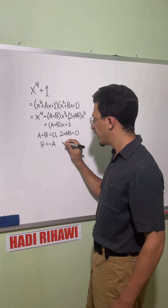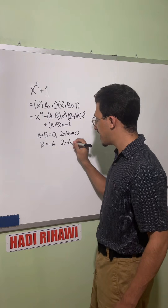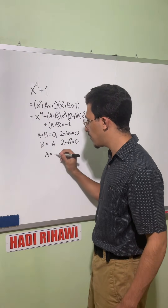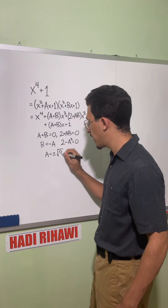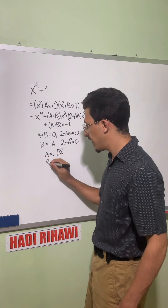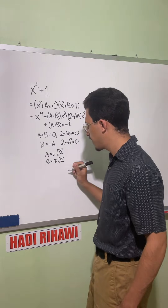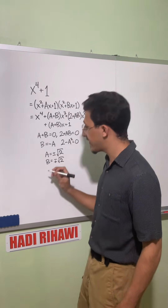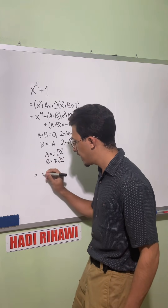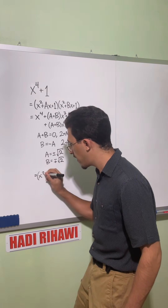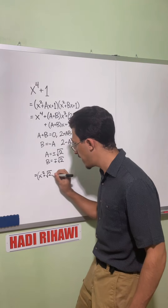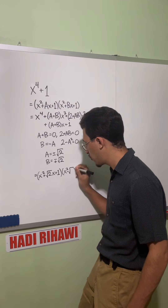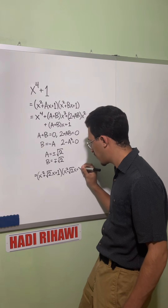Plugging that in, we get two minus a squared equals zero, which means a equals plus or minus root two, and b equals minus plus root two. Taking a to be the positive square root of two and b to be the negative square root of two, we get that this factors into x squared plus root two x plus one, times x squared minus root two x plus one.